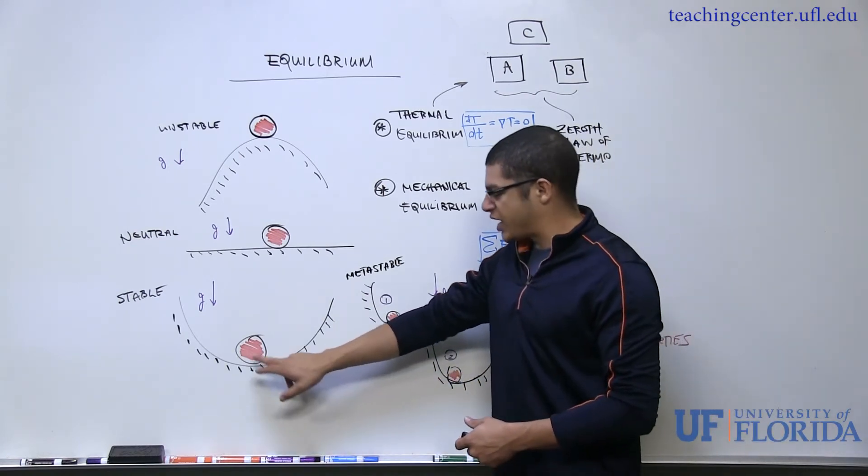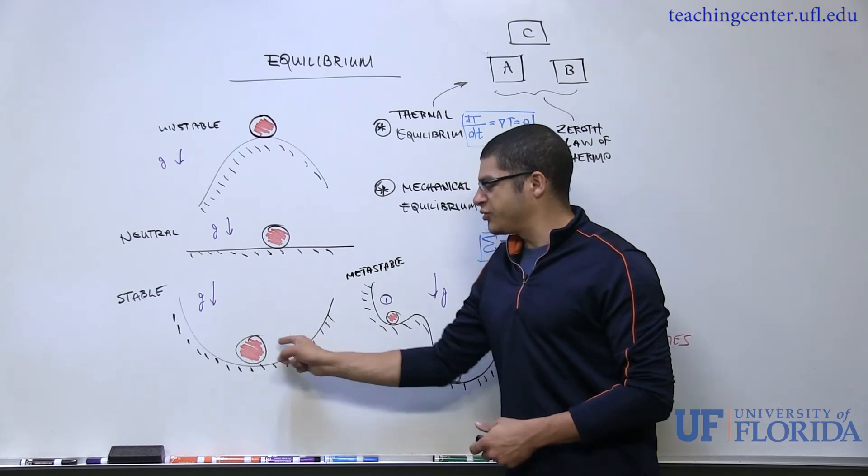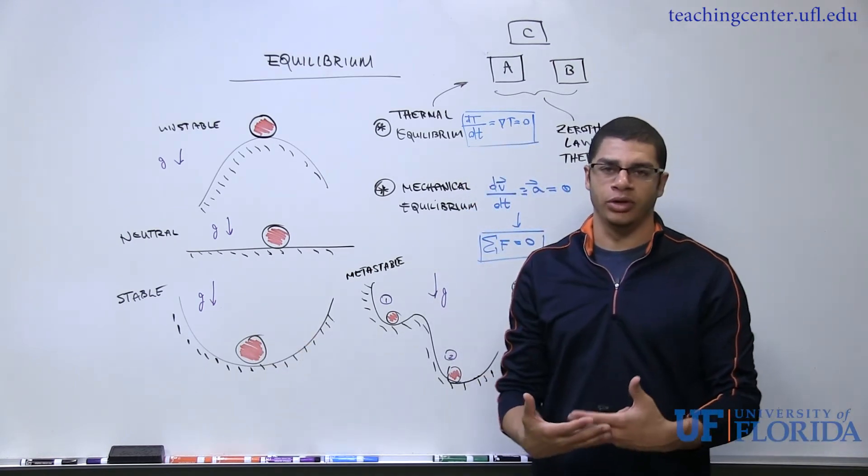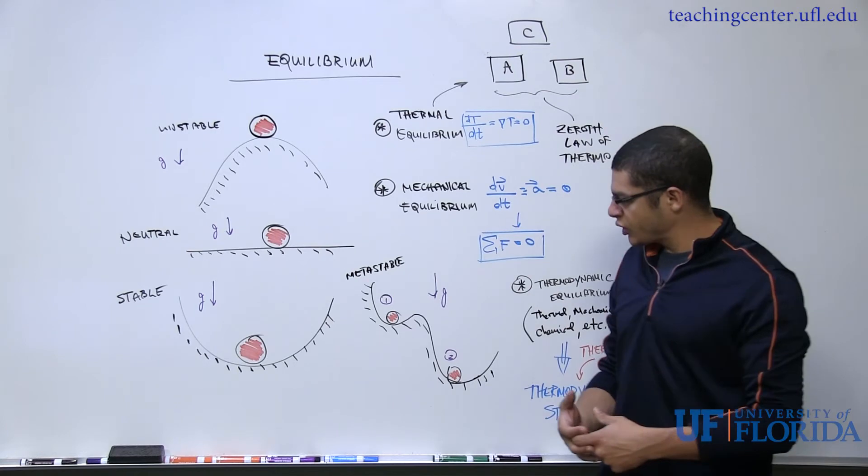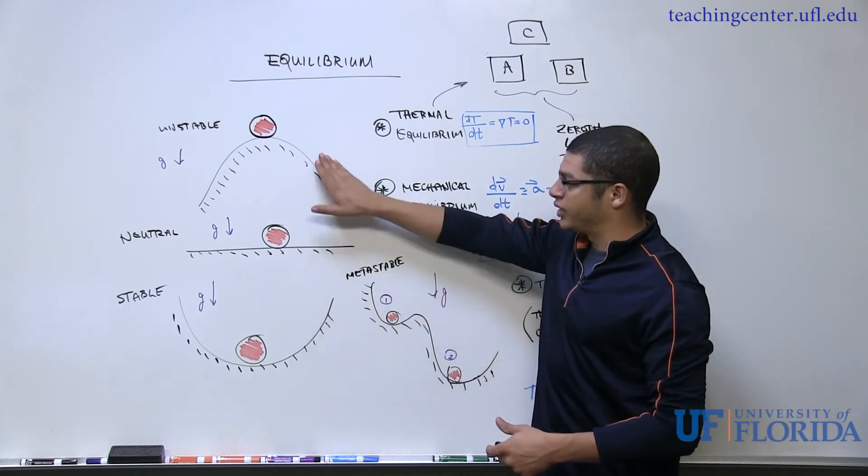Stable equilibrium occurs when I have a system in equilibrium. If I perturb it, it has a tendency to come back to the equilibrium state, which is converse to unstable equilibrium.